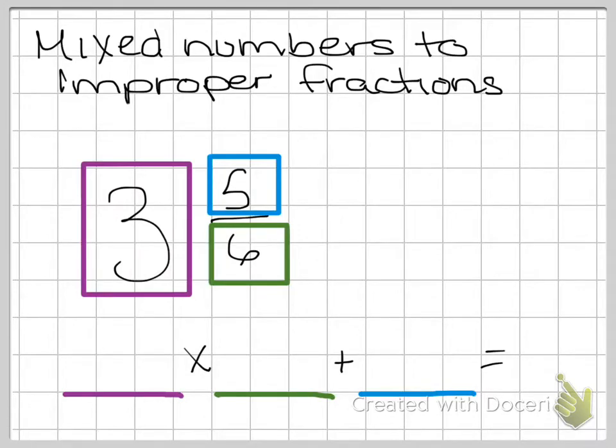In this video, we are going to be looking at how to turn the mixed number 3 and 5 sixths into an improper fraction using the linear method.